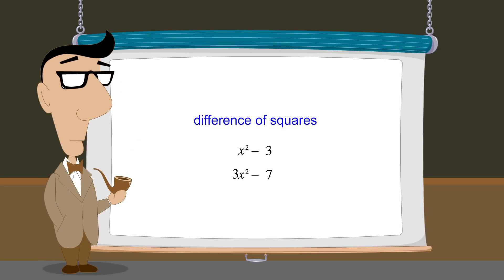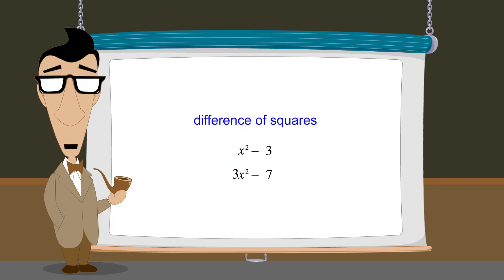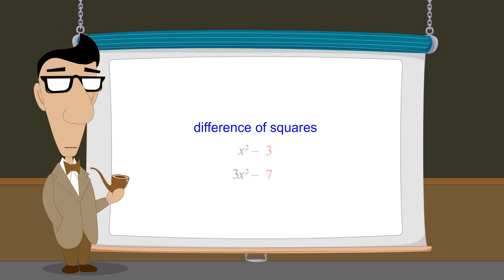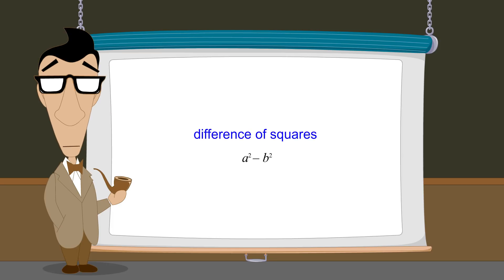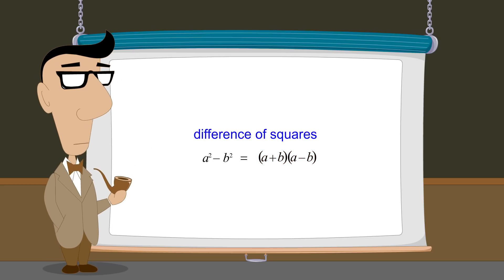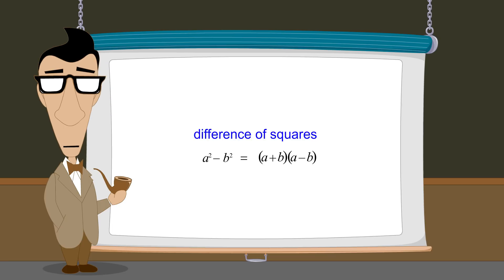So the only requirement for a quadratic to be a difference of squares is that it must be able to be written as x-squared multiplied by any positive constant minus any positive constant. When we recognize that a quadratic expression matches the form a-squared minus b-squared, we know it can be factored as a-plus-b times a-minus-b, making it a simple task to find the zeros of the quadratic function and the solutions to the corresponding quadratic equation. In the next lecture, we will see how to factor quadratics that are perfect squares.